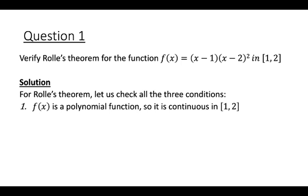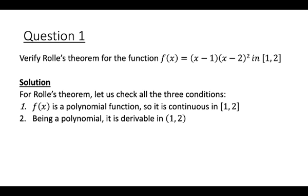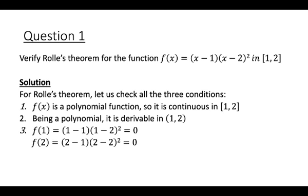Number one: as f(x) is a polynomial function, it is continuous in the closed interval [1, 2]. Number two: f(x) is a polynomial function, so it is derivable in the open interval (1, 2). And f(1) = f(2) = 0. So all three conditions are verified, and therefore f'(c) = 0.